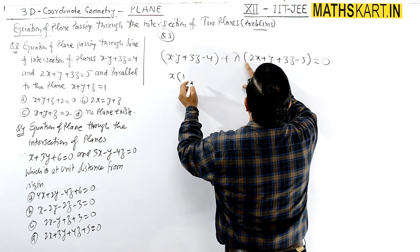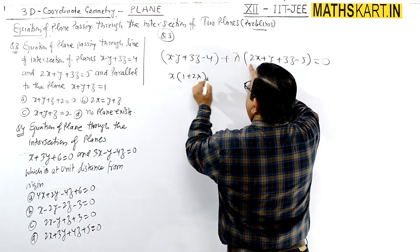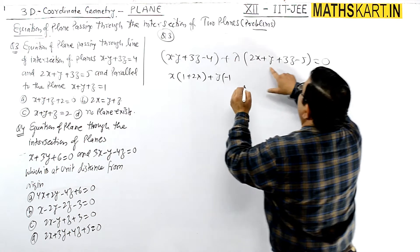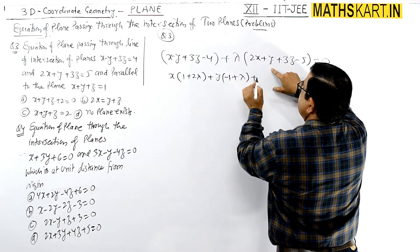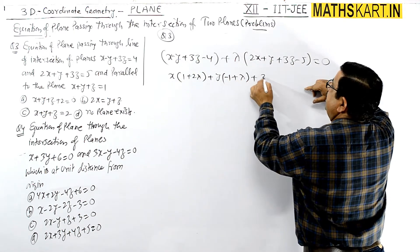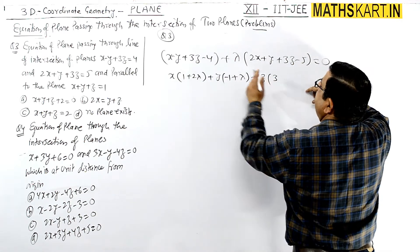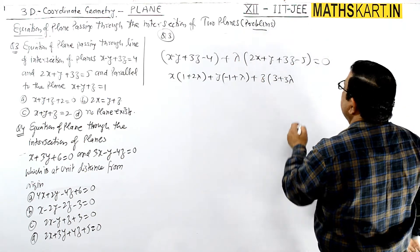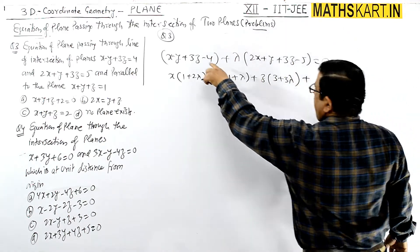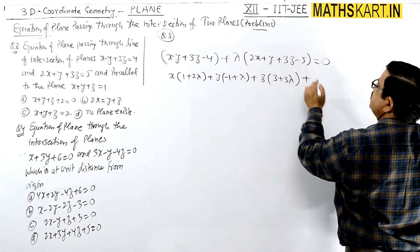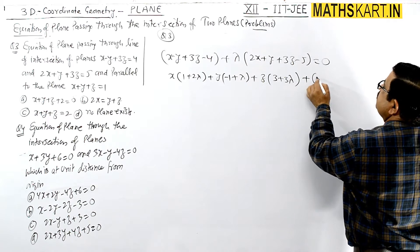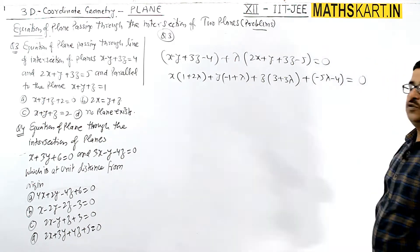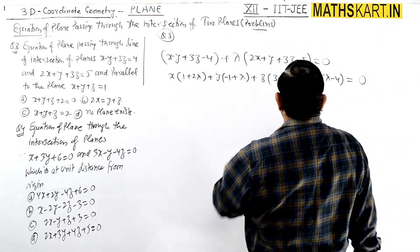Now collecting coefficients: x coefficient is 1 plus 2 lambda, y coefficient is minus 1 plus lambda, z coefficient is 3 plus 3 lambda, and the constant term is minus 4 minus 5 lambda. So the equation becomes: (1 plus 2 lambda)x plus (lambda minus 1)y plus (3 plus 3 lambda)z plus (minus 5 lambda minus 4) equals 0.